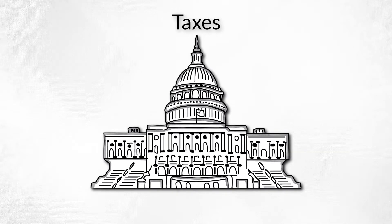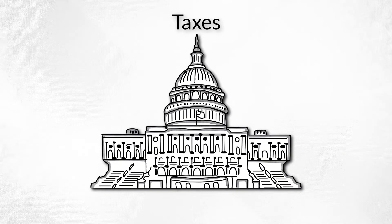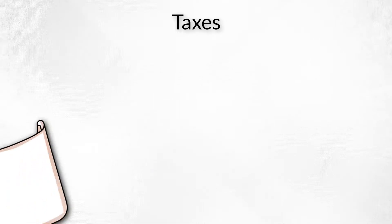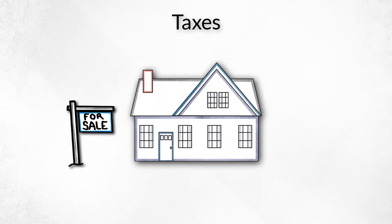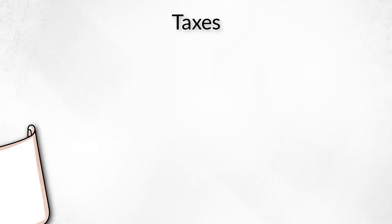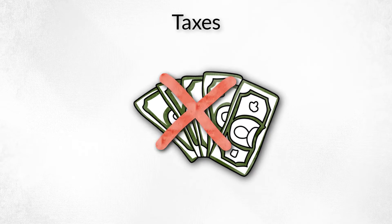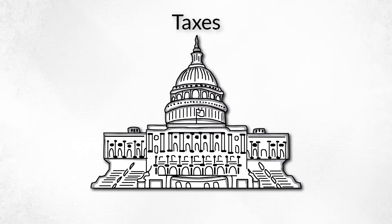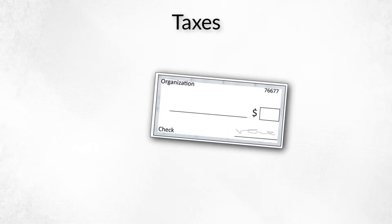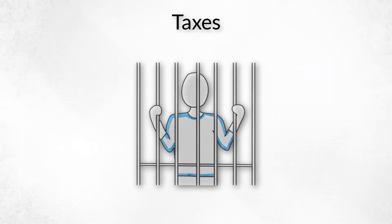A tax is compulsory — in other words, the government compels citizens to pay taxes. For example, if you don't pay your property taxes, a tax lien will be issued for your home, and when your home is sold, the proceeds will be used to pay your delinquent property taxes. Tax liens can also be filed to secure payment for delinquent income taxes. The government can also assess penalties and fees if delinquent taxes are not paid, as well as enforce criminal penalties for types of tax evasion.